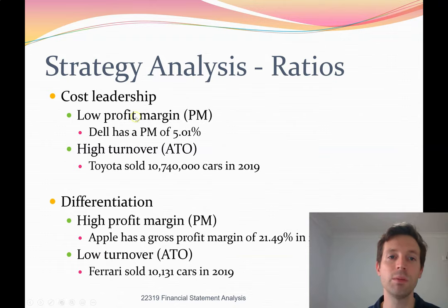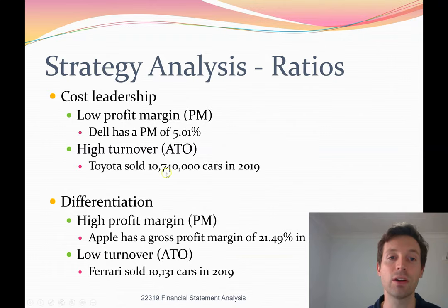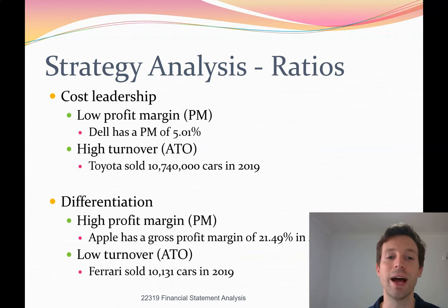For example, a cost leadership firm like Dell Computing had a profit margin of 5.01% last year. If we compare that to Apple, who follow a differentiated strategy, Apple have a very high profit margin of 21.49% last year — over four times higher than cost leader competitor Dell. However, on the other side, the turnover ratio: a cost leader sells lots of products and that's where they make their money. Toyota sold over 10 million cars in 2019. Compare that to differentiated product Ferrari, who have very low turnover and only sold 10,000 cars last year. Both businesses are very successful and profitable; however, they make their money in different ways. Cost leaders have a low profit margin and high turnover such as Dell or Toyota, whereas differentiated products have high profit margins but low turnover such as Apple or Ferrari.